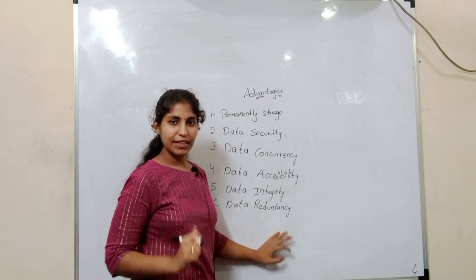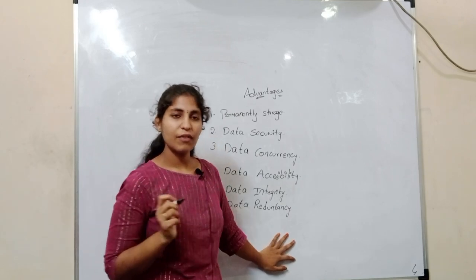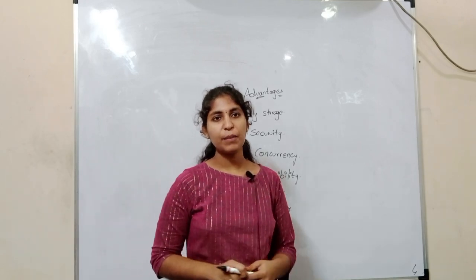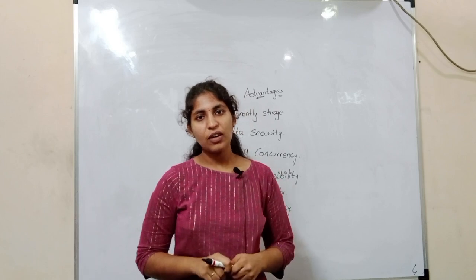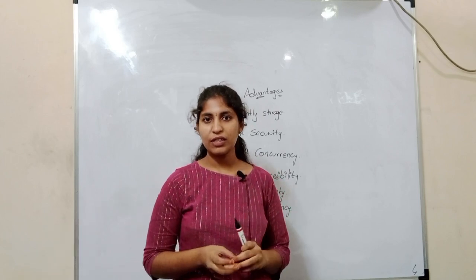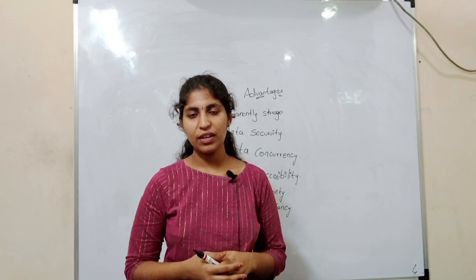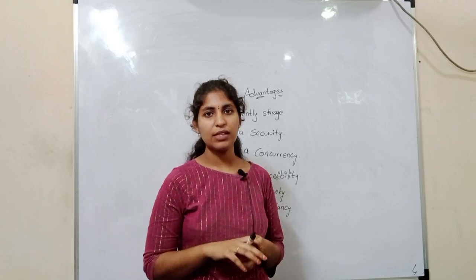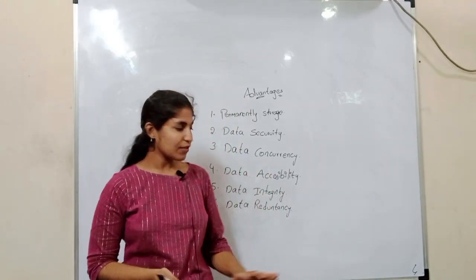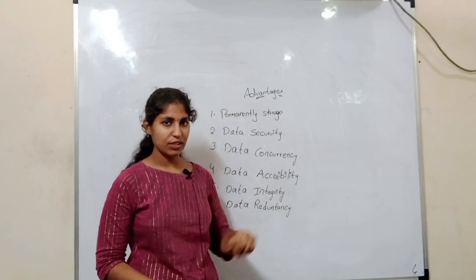The sixth advantage is data redundancy. Data redundancy means we can control the duplication of data. By using constraints such as null and not null, we can store the data in our tables. Using primary key constraints, we can reduce the duplication in our storage.